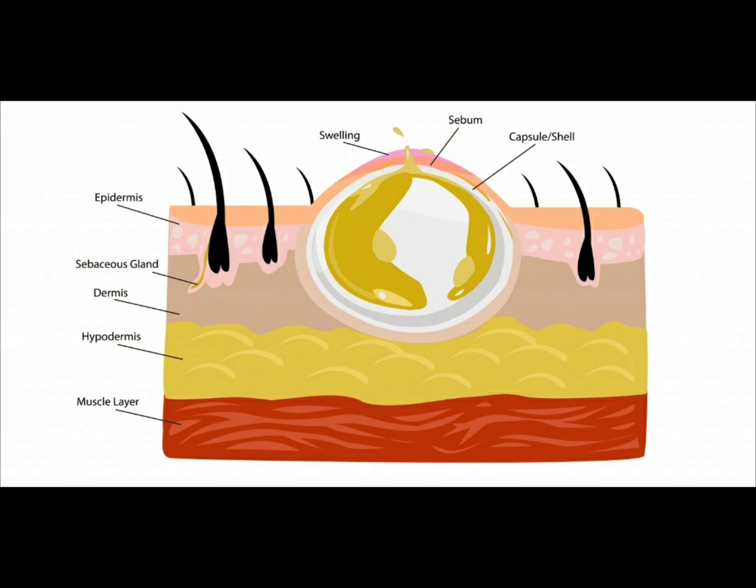These are also called epidermoid cysts. Though it is a swelling arising from the dermis layer, it has clinical features of an epidermal swelling. A classical clinical finding in a sebaceous cyst is a black punctum, which represents a blocked duct.